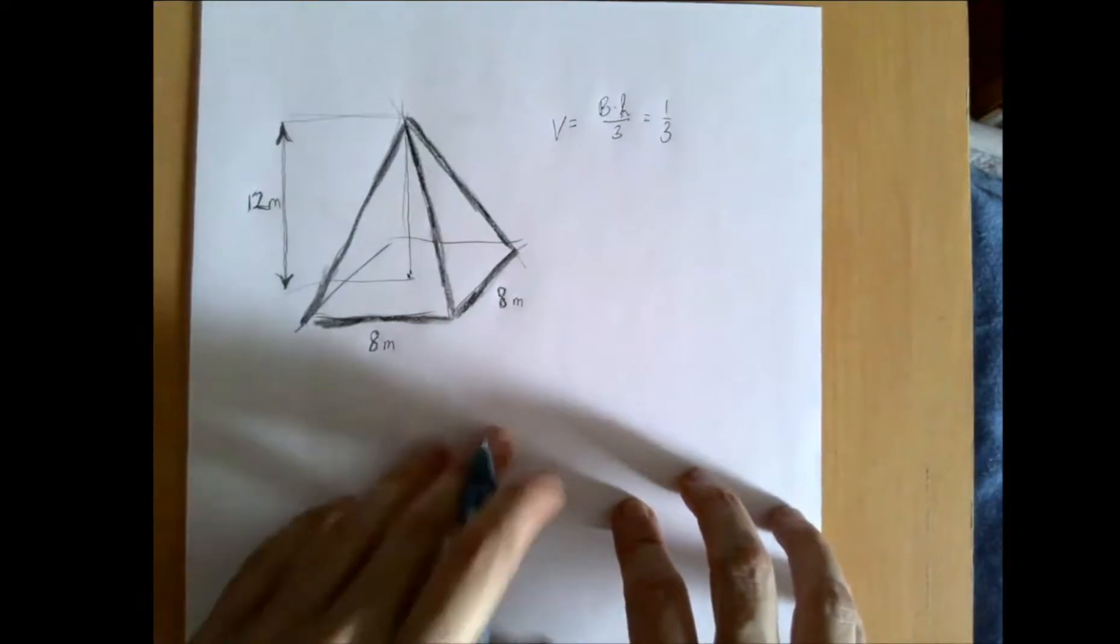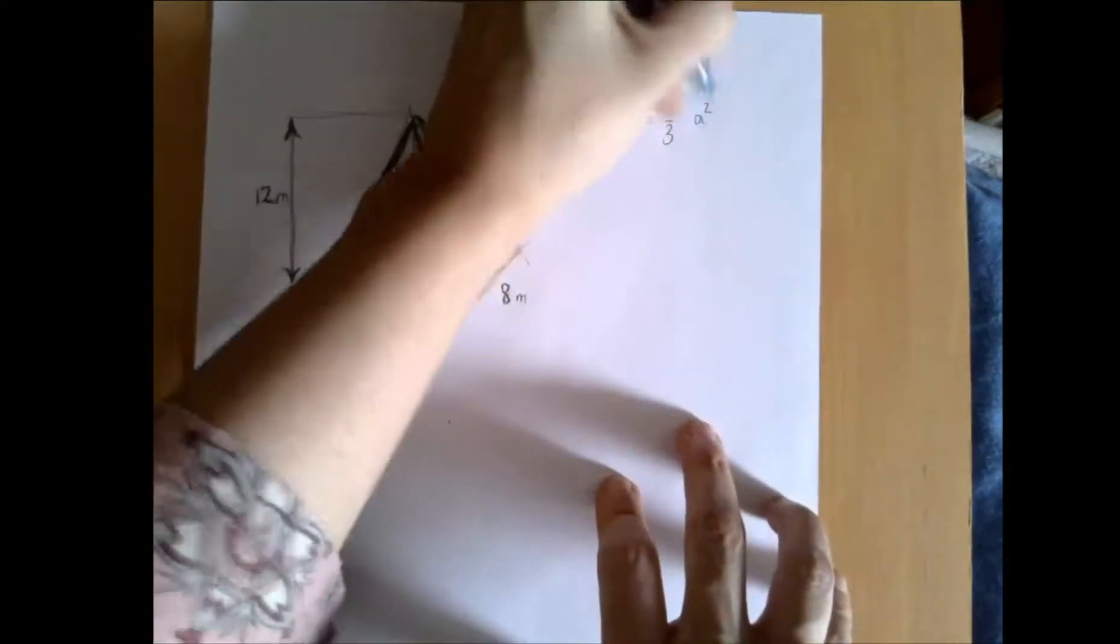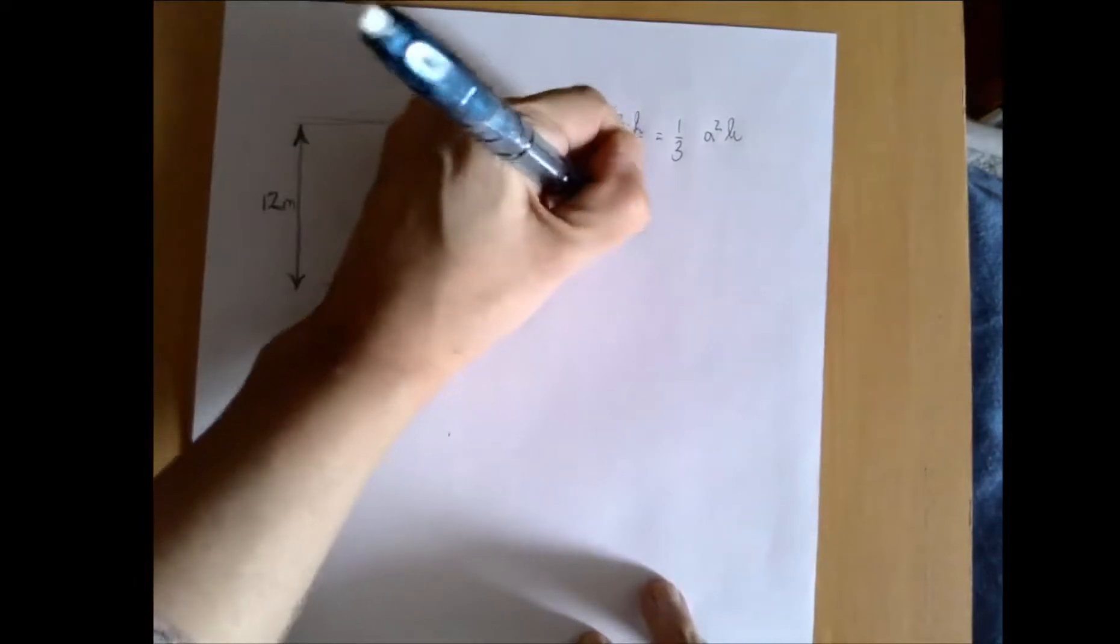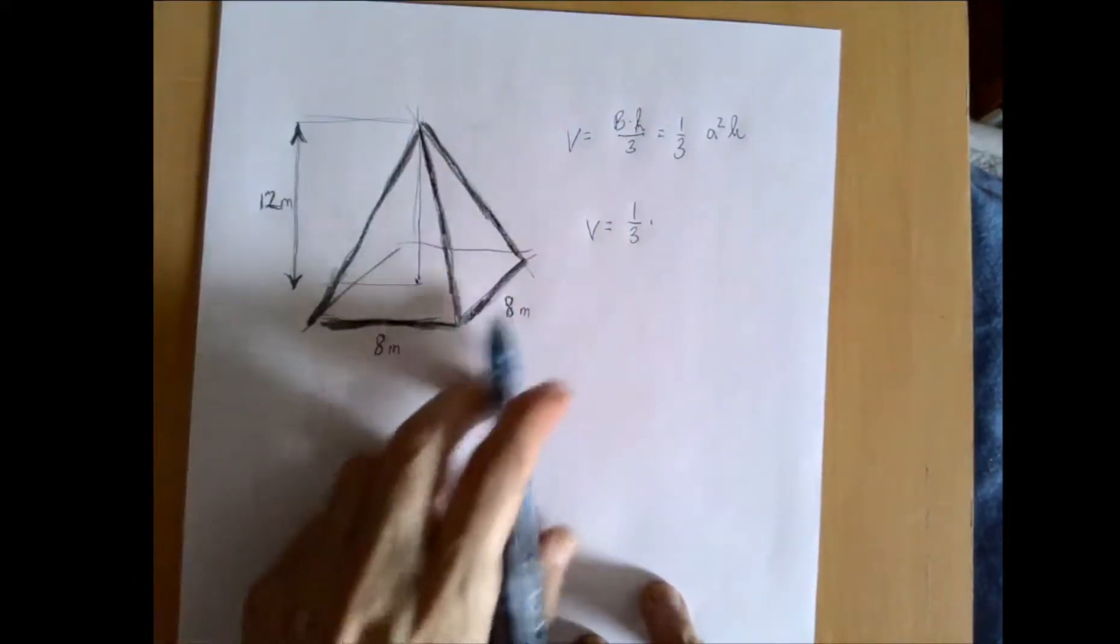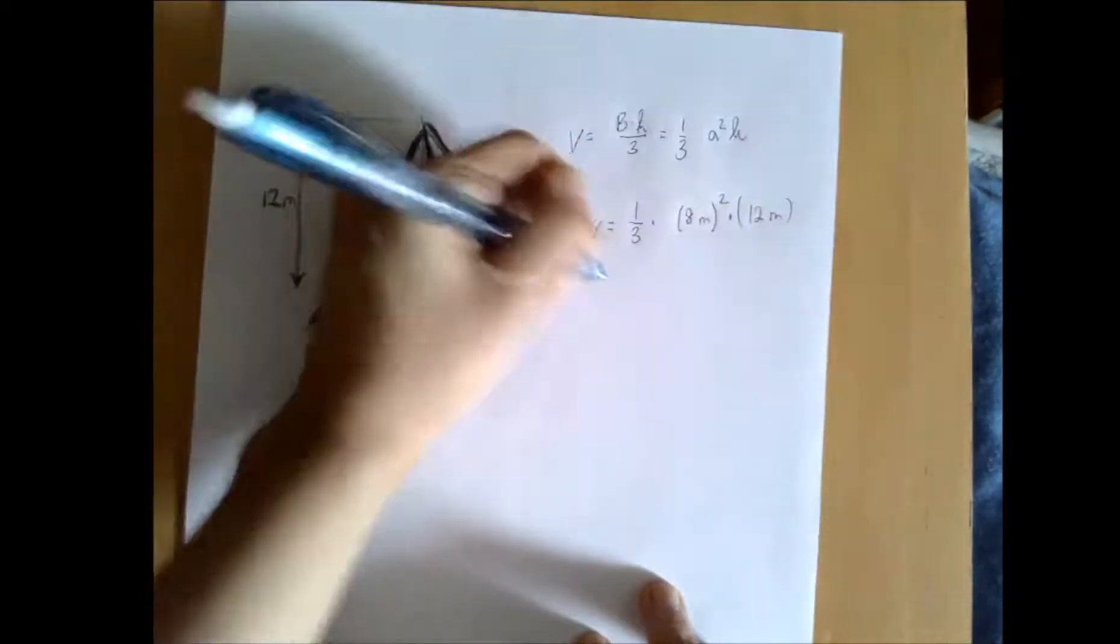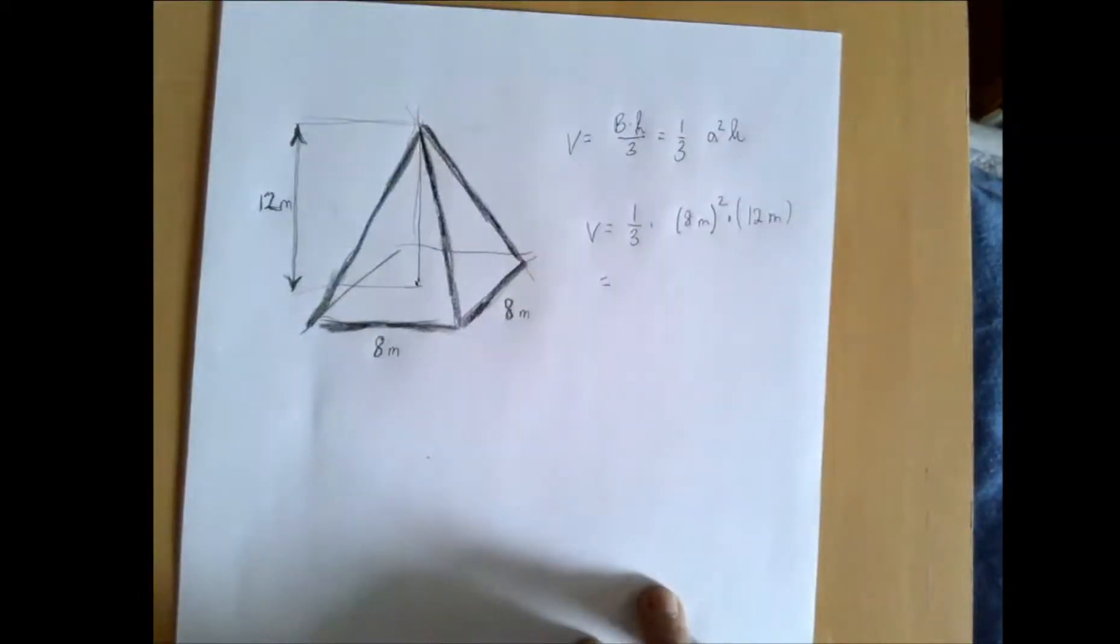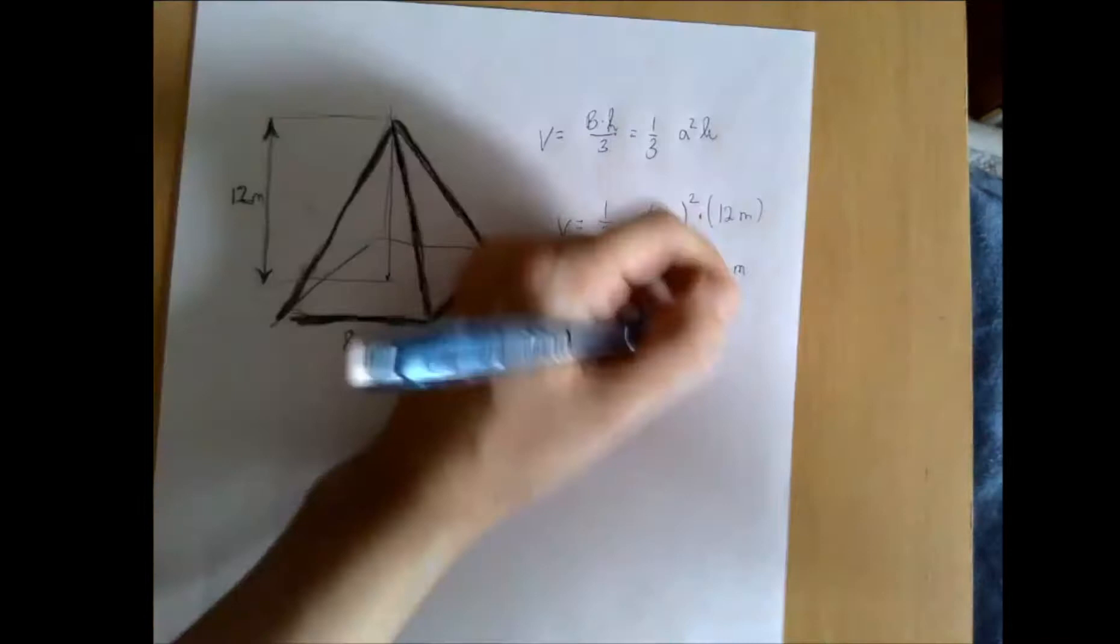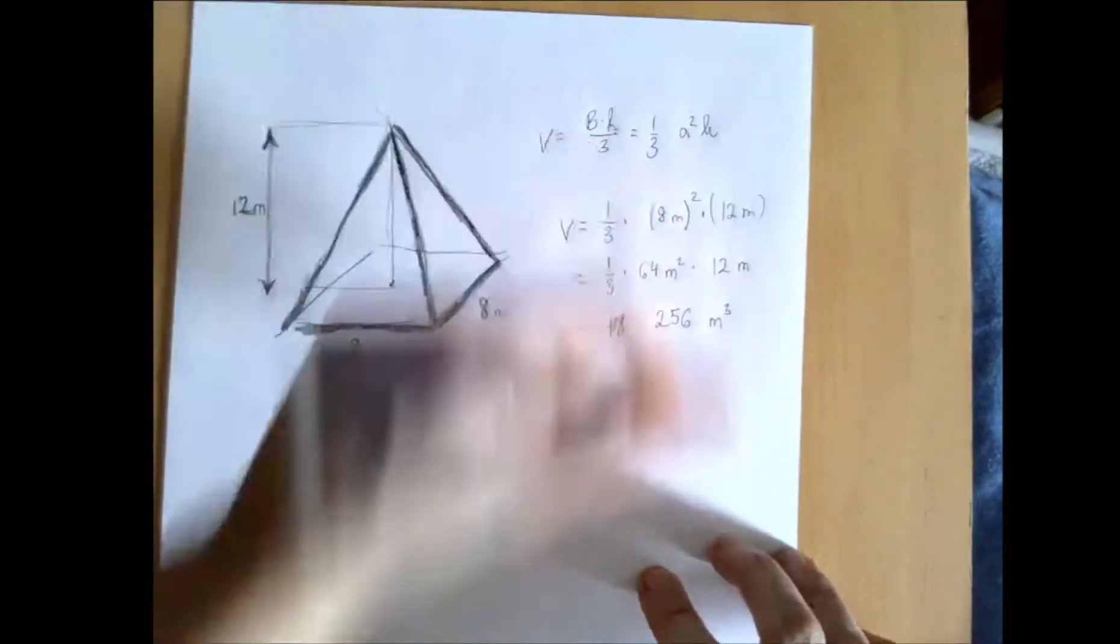The base area is in this case the side of the square. So that means we have 1/3 times a is the side of the square, so that's 8 meters squared and the height is 12 meters. So we get 1/3 times 64 square meters times 12 meters, which is 256 cubic meters.